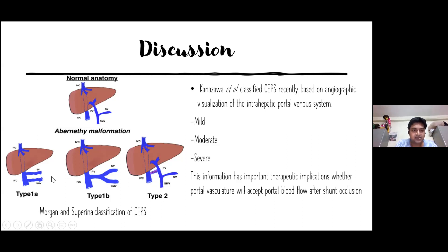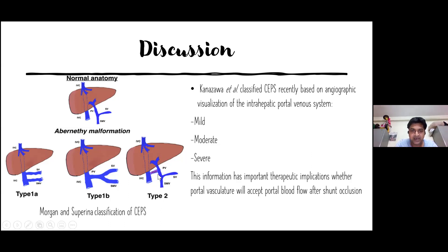In Type 1A, there is complete absence of the portal vein — the superior mesenteric vein and splenic vein directly join the IVC. In Type 1B, a portal venous system exists but with no intrahepatic course — the superior mesenteric and splenic veins form a portal vein that directly joins the IVC without entering the liver. In Type 2, everything is normal — the portal vein forms, enters the liver, and divides into branches — but there is an extra abnormal connection between the portal vein and the IVC.